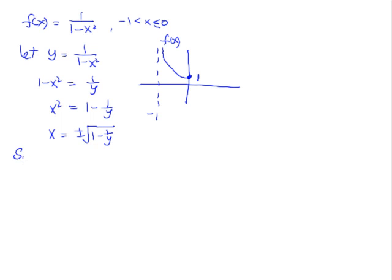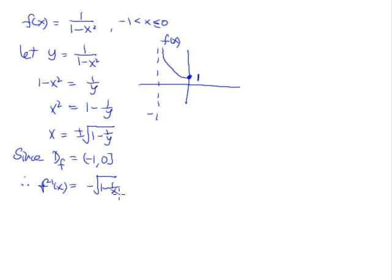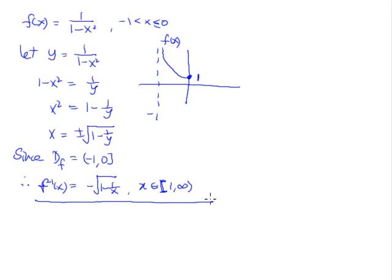So what we do is: since the domain of f is negative 1 to 0, our f inverse of x will be the negative part, so it will be negative root of (1 minus 1 over x). Of course we must define the domain for f inverse — the domain of f inverse is the range of f. From the graph we can see that the range of f is x between 1 to infinity, inclusive of 1, with a square bracket, because x can be 0 and therefore f(0) = 1. So this is the answer for the first part.